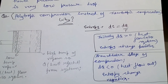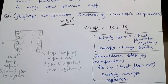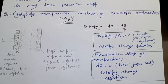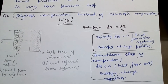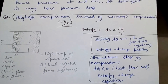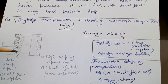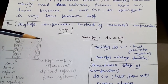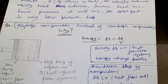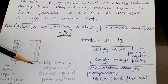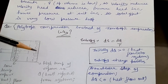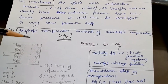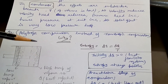During polytropic compression inside the compressor cylinder, at the beginning of the compression process the vapor temperature is low, so heat flows from the outside into the system. Later in compression, the temperature rises significantly due to compression. Now the vapor is at a high temperature while the surroundings are cooler, so heat flows out of the system.